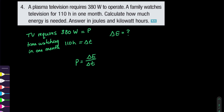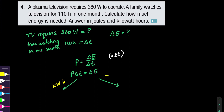The relationship we'll use is power equals delta E over delta T, and we rearrange for the electrical energy by multiplying both sides by the change in time. Since they're asking for the answer in both kilowatt-hours and joules, we'll break this into two separate calculations — the first in kilowatt-hours and the second in joules.